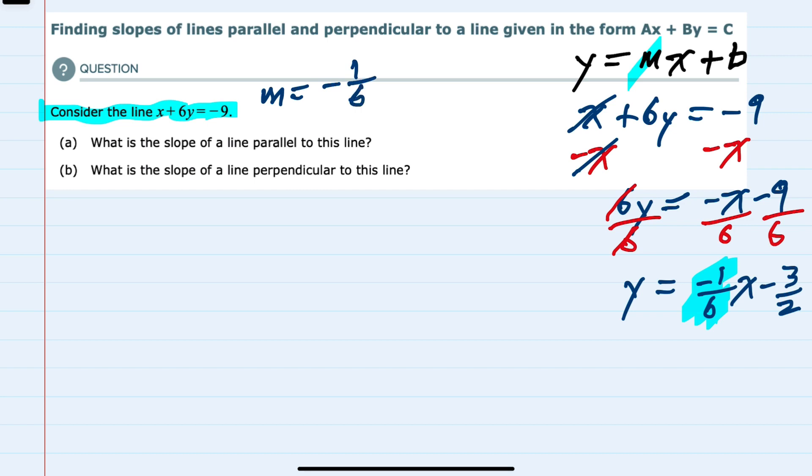So for the first question, what is the slope of a line parallel to this? Parallel would be the same. So that slope parallel would also be negative 1/6.